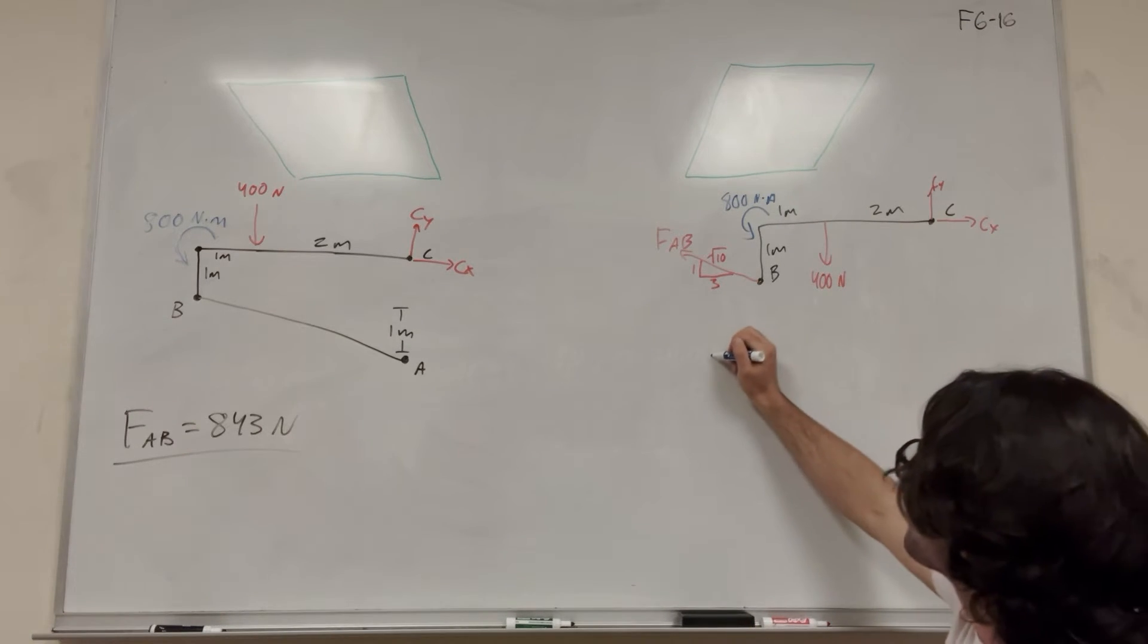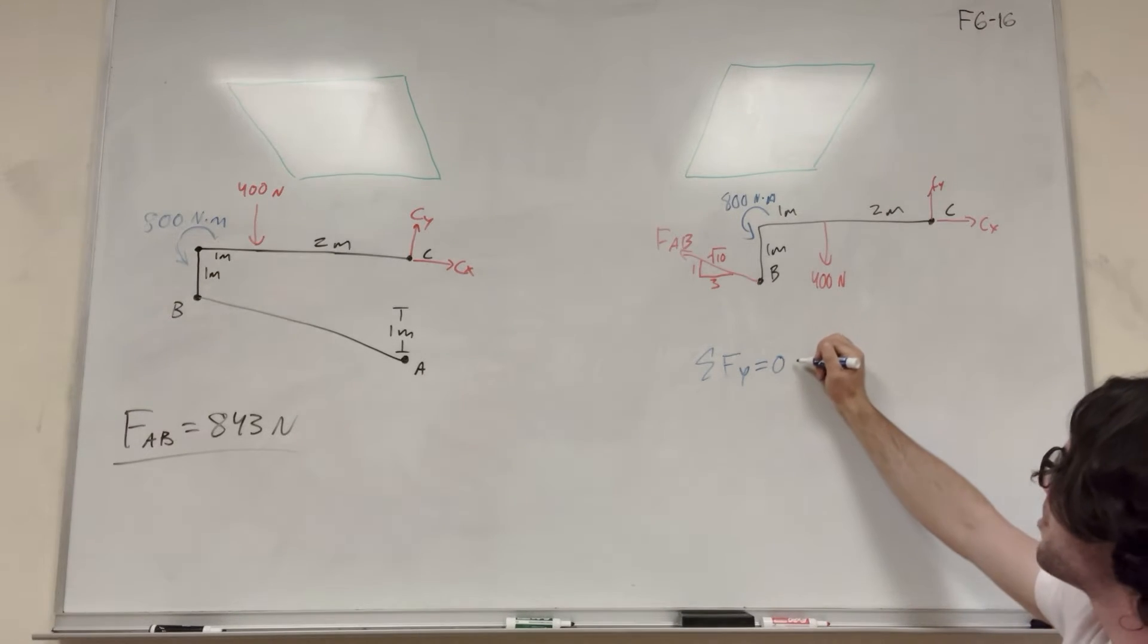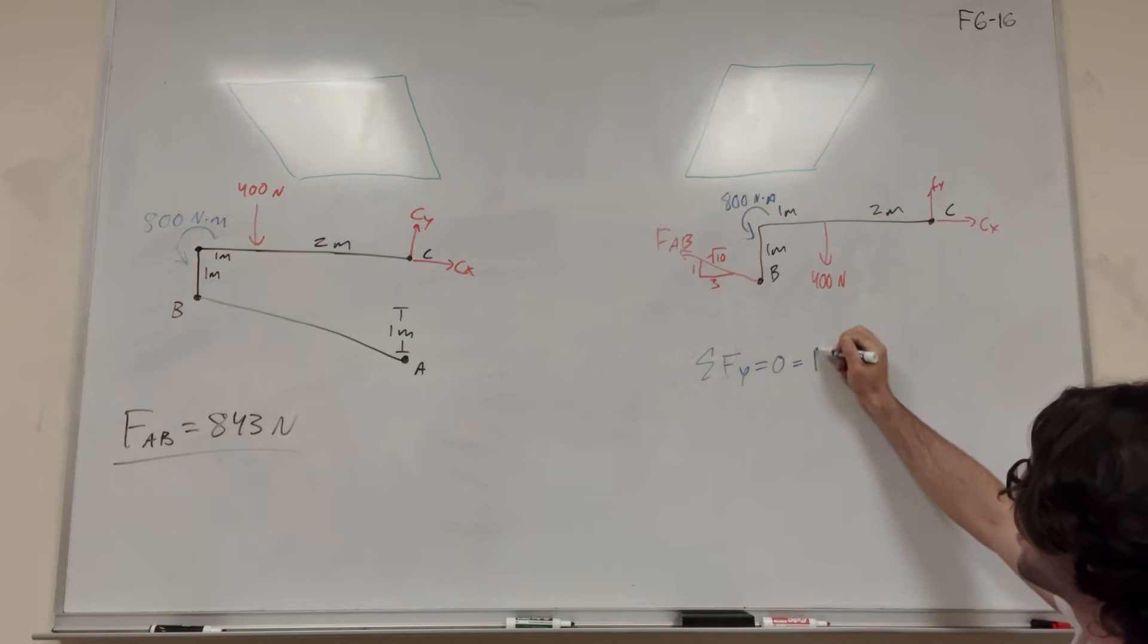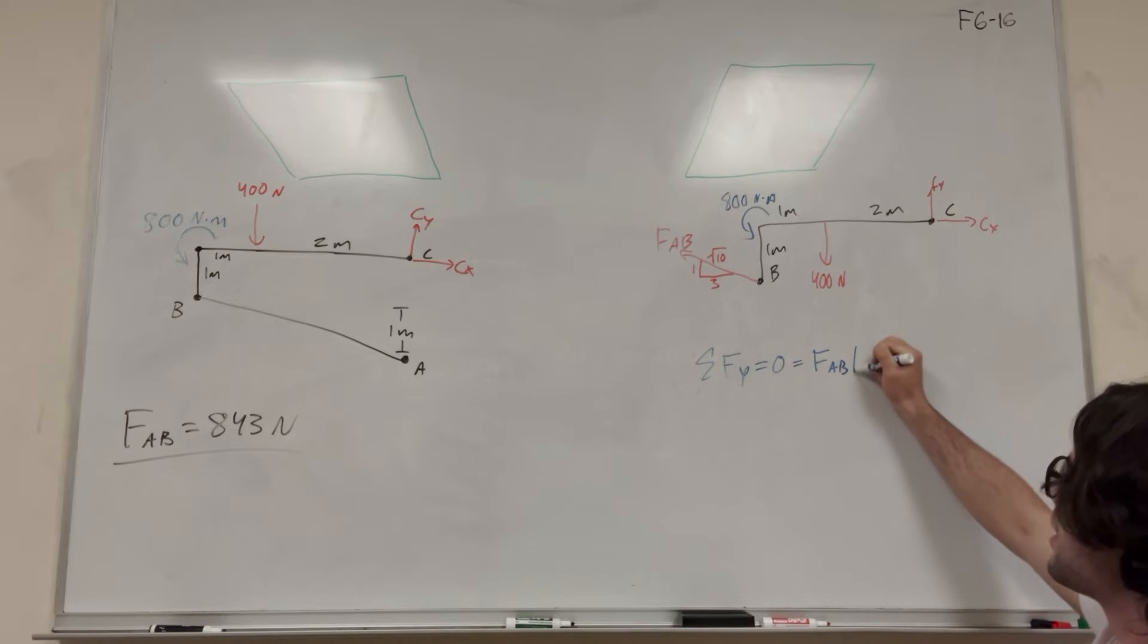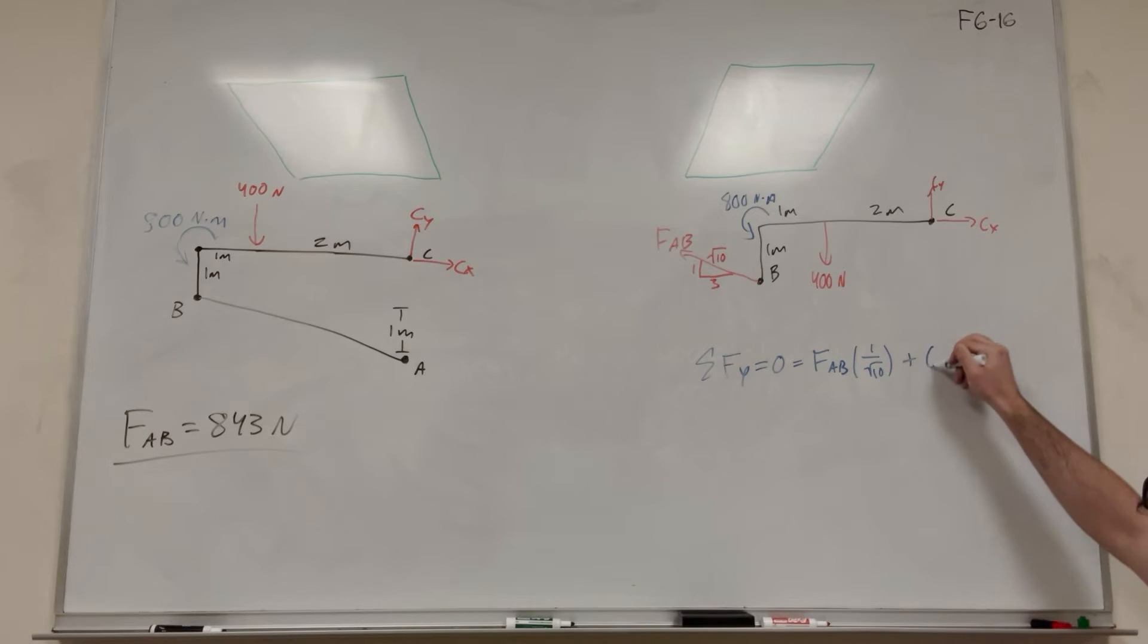So let's find Cy, sum of the forces in the Y direction. We know it's equal to zero. We're at equilibrium. So it's going to be force AB times its vertical component, 1 over square root of 10, plus Cy. Oh, and then we have this 400 Newton force. That's what I was forgetting. So that would be minus 400.